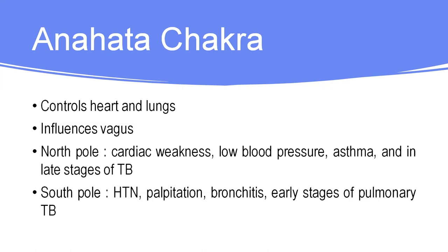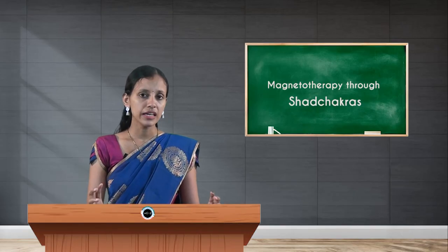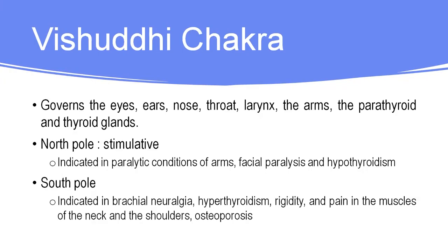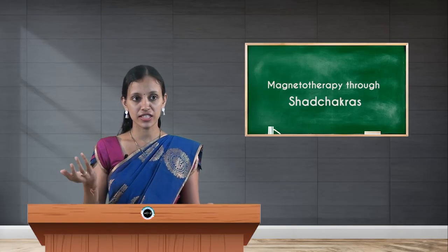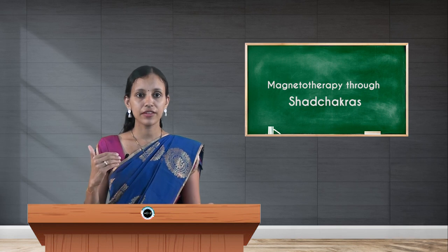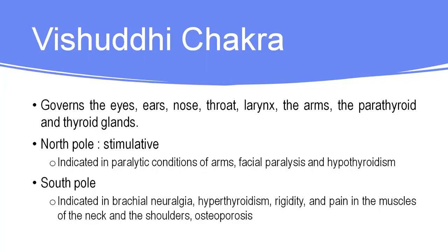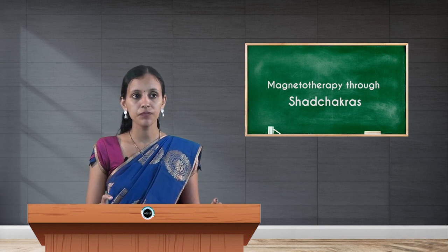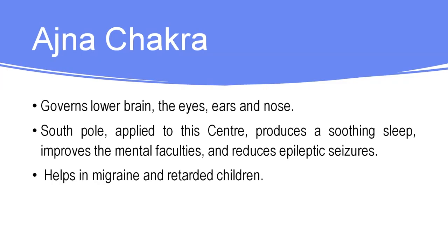Vishuddhi chakra, located at the center of the throat, governs the eyes, ears, nose, throat, larynx, arms, parathyroid, and thyroid gland. For underactive gland activity, use the north pole; for overactive gland activity, use the south pole of the magnet. Ajna chakra mainly governs the lower brain, eyes, ears, and nose.